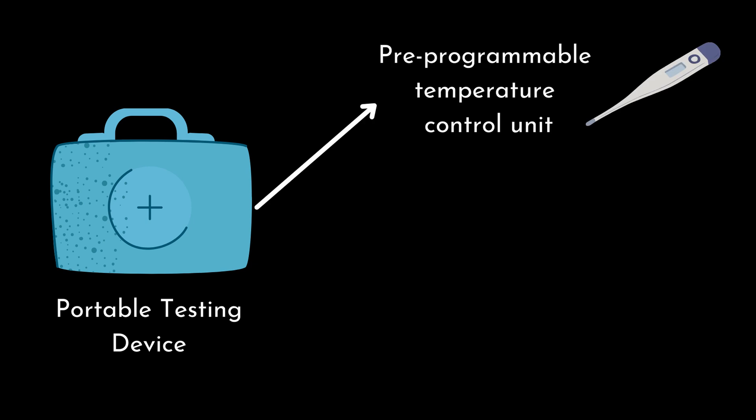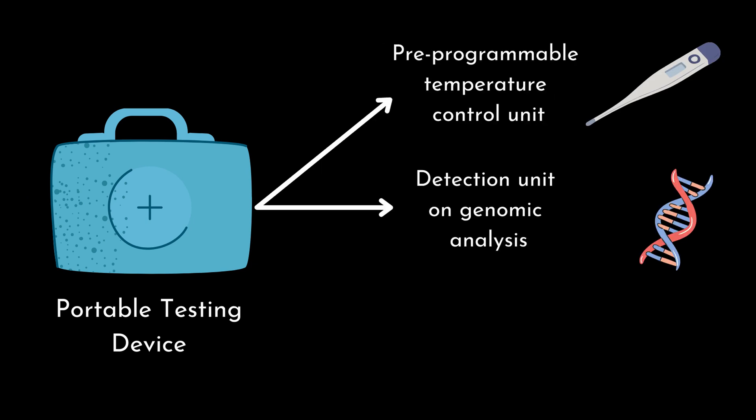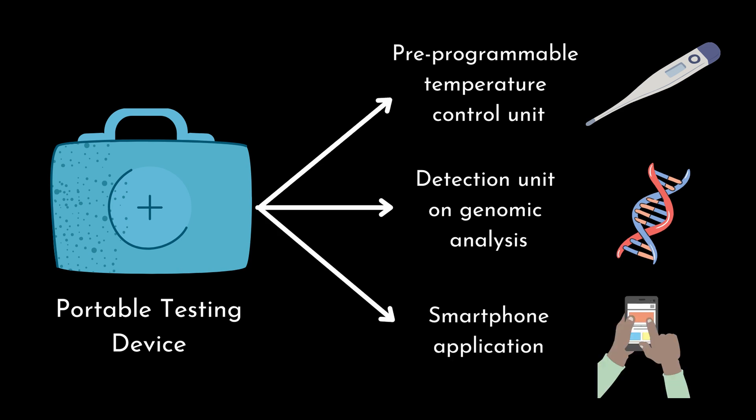Covirap, a diagnostic tech developed by IIT Kharagpur, is a portable testing device that uses a pre-programmable temperature control unit, a specialized detection unit on genomic analysis, and a customized smartphone application for obtaining results.